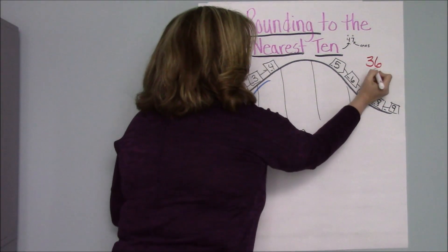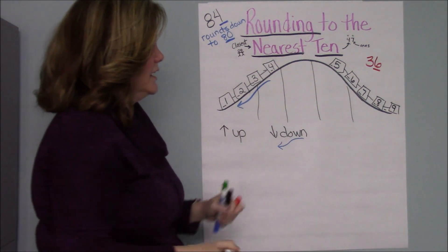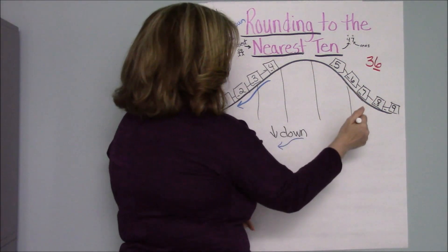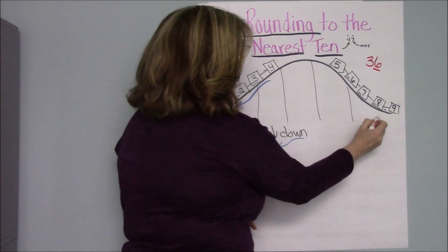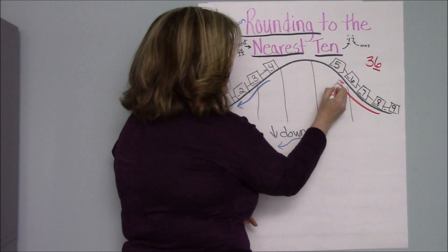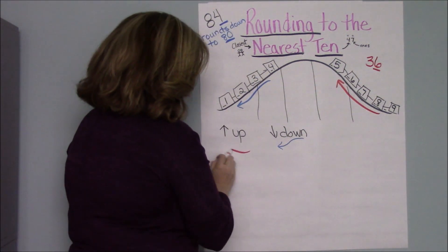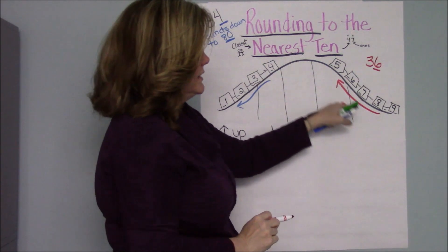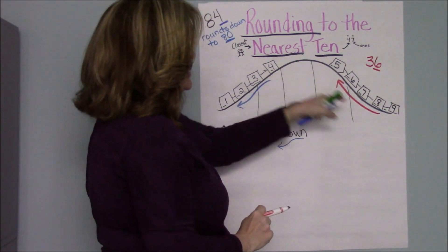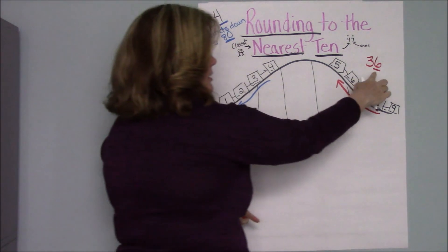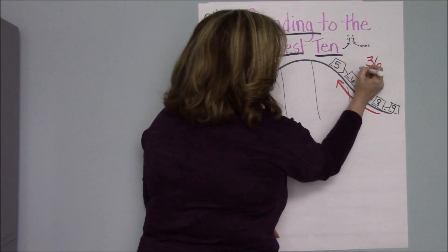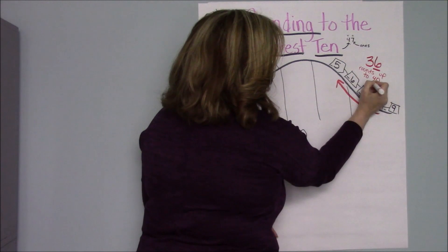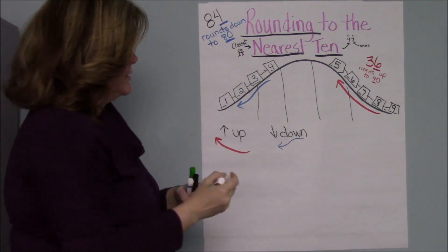So first step, I'm going to look at my ones and I'm going to find it on the roller coaster. So my six is over here. This car is going up. If your one's passenger here is on this side of the roller coaster going up, we're going to round up. And we are going to say 36 rounds up. So we're going up to 40. We're going up to the next ten.